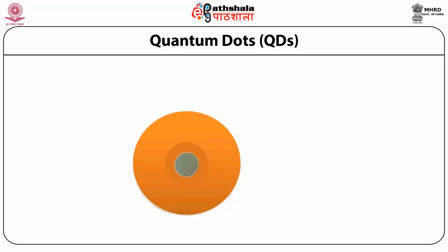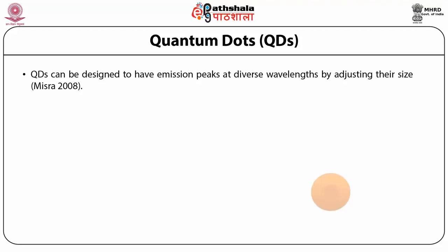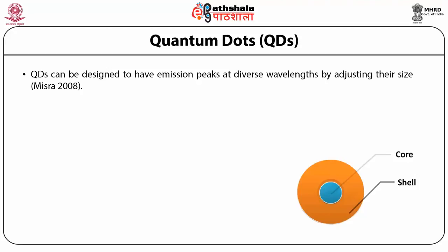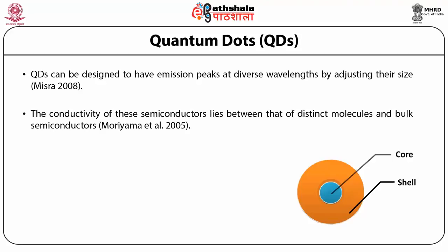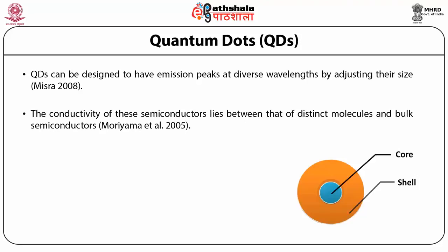The structure of quantum dots shows a core and a shell. As discussed, they are made up of semiconductor groups — one group forms the core and the other forms the shell of the quantum dots. Quantum dots can be designed to have emission peaks at diverse wavelengths by adjusting their size. You can adjust either their size or composition to have different emission peaks. The conductivity of these semiconductors lies between that of distinct molecules and bulk semiconductors.